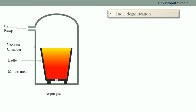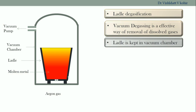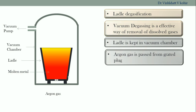Most of the time, the degasification will take place in the ladle itself. Vacuum degassing is an effective way of removal of dissolved gases from the molten metal. The ladle is kept in a vacuum chamber, and a vacuum pump is used to reduce the pressure in the chamber to the order of 1 Torr to 5 Torr. When the molten metal is exposed to the low pressure, the gas formation will become less and the gases will get separated from the liquid metal. In this way, exposure of molten metal to low pressure helps in removal of the dissolved gases.